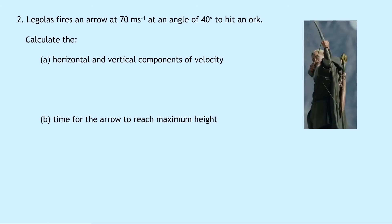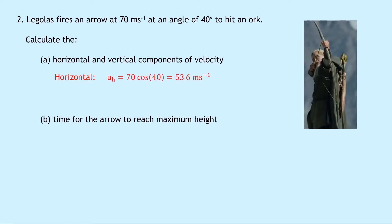Question two says Legolas fires an arrow at 70 meters per second at an angle of 40 degrees to hit an orc. Part a says calculate the horizontal and vertical components of the velocity. For the horizontal component using cosine: u_h equals 70 cos 40, which equals 53.6 meters per second. For the vertical component using sine: u_v equals 70 sin 40, which equals 45.0 meters per second, both rounded to one decimal place.